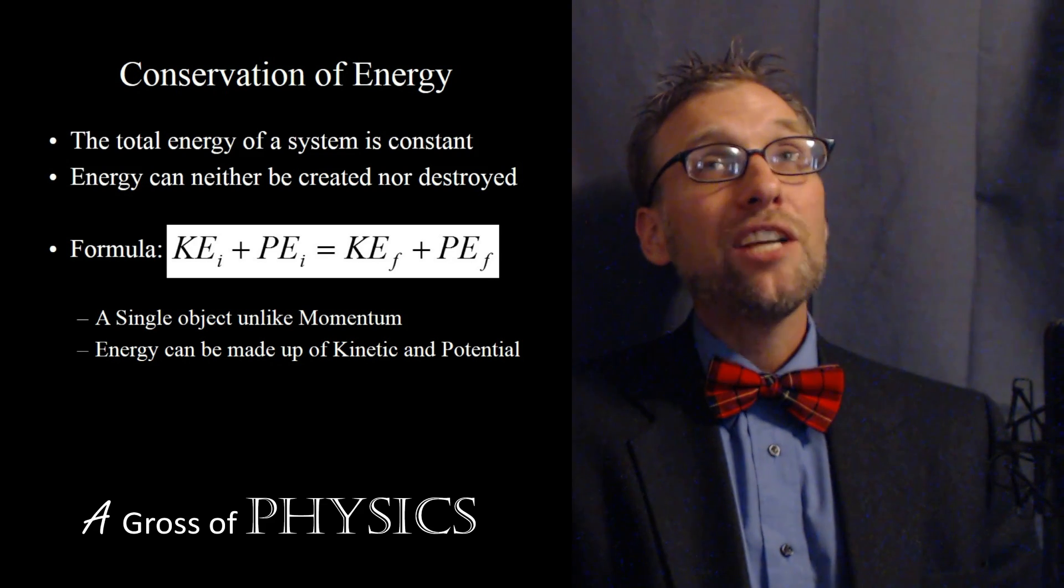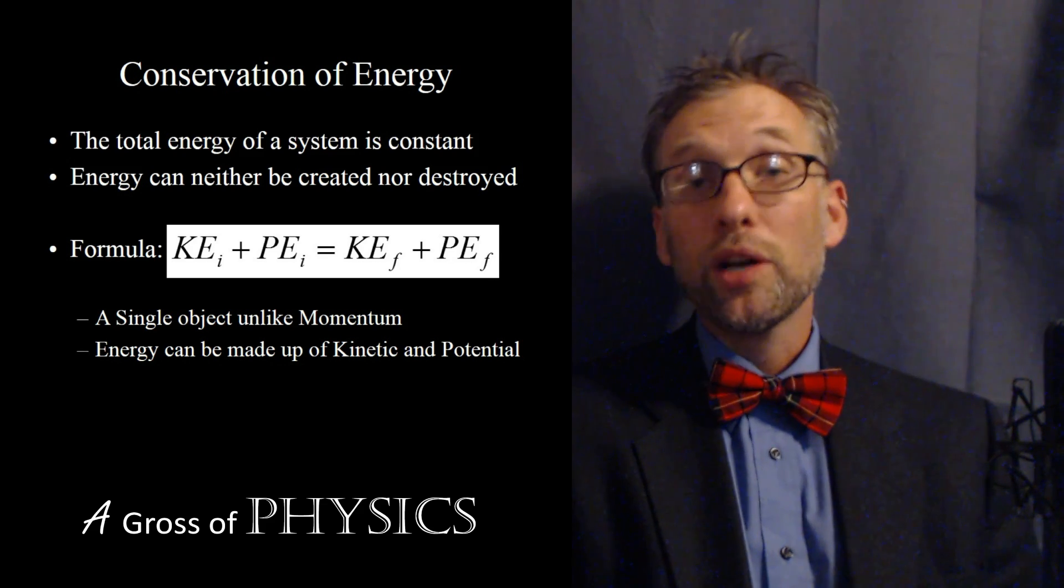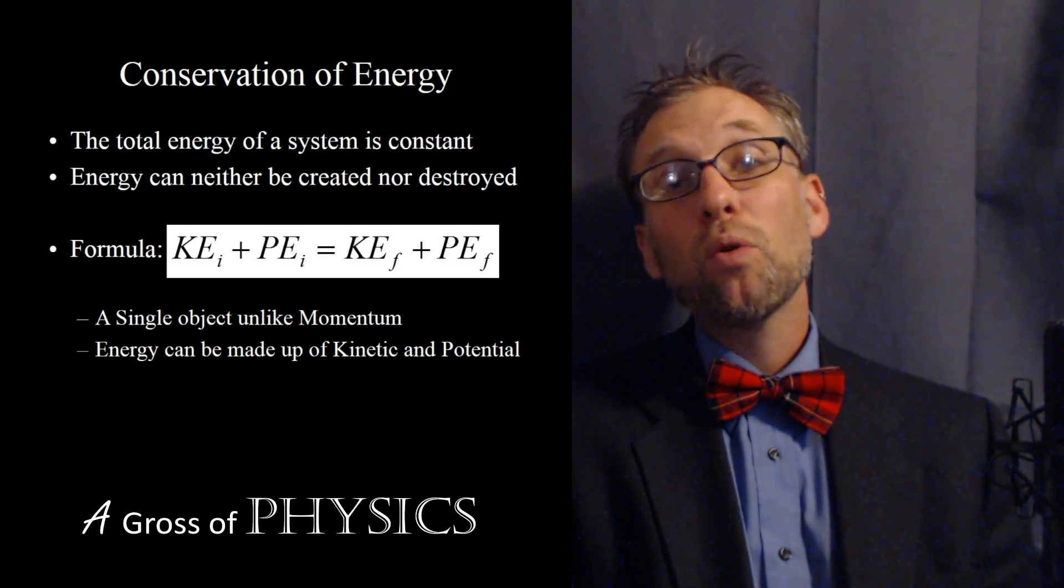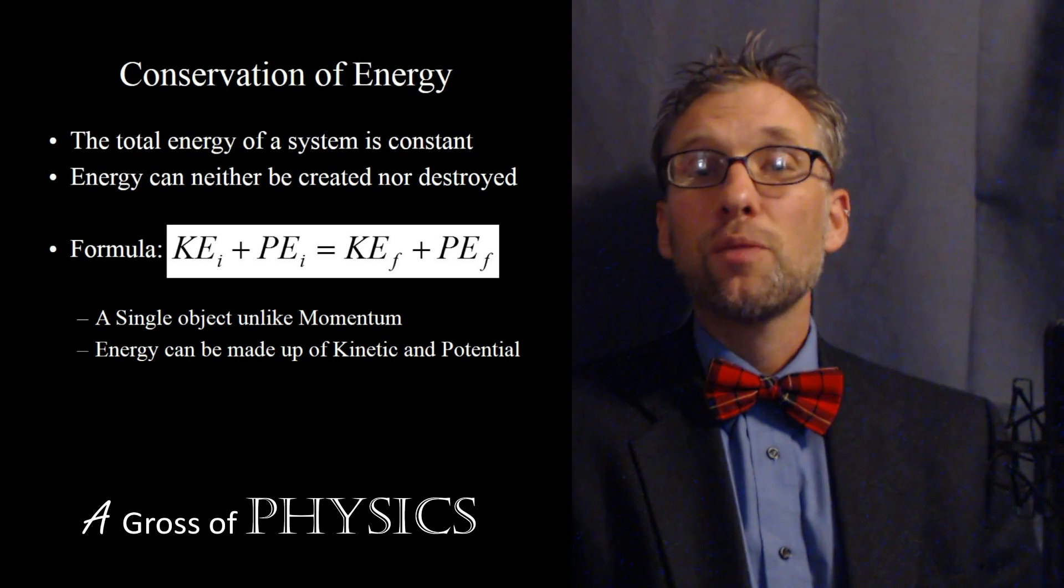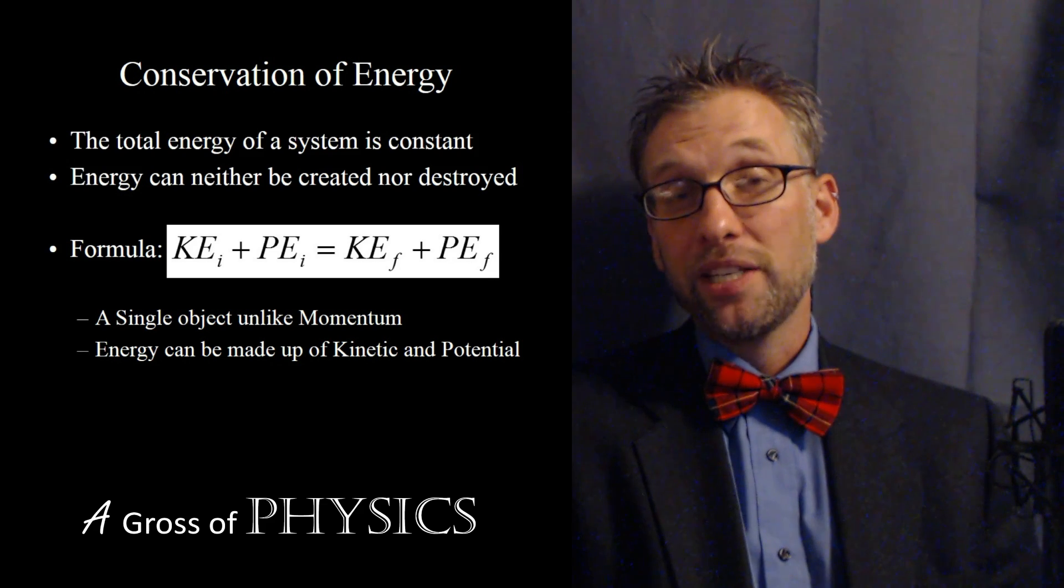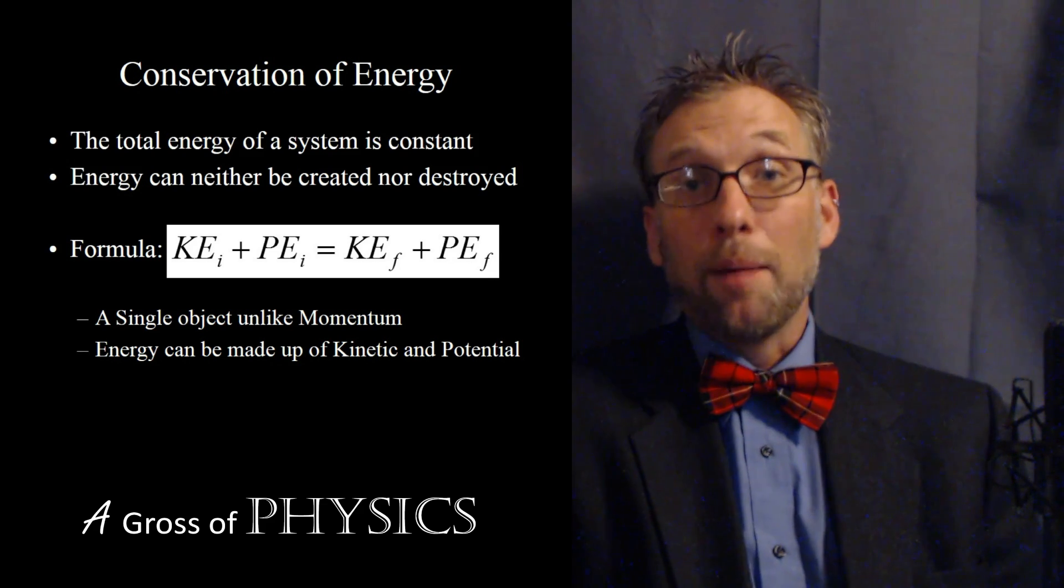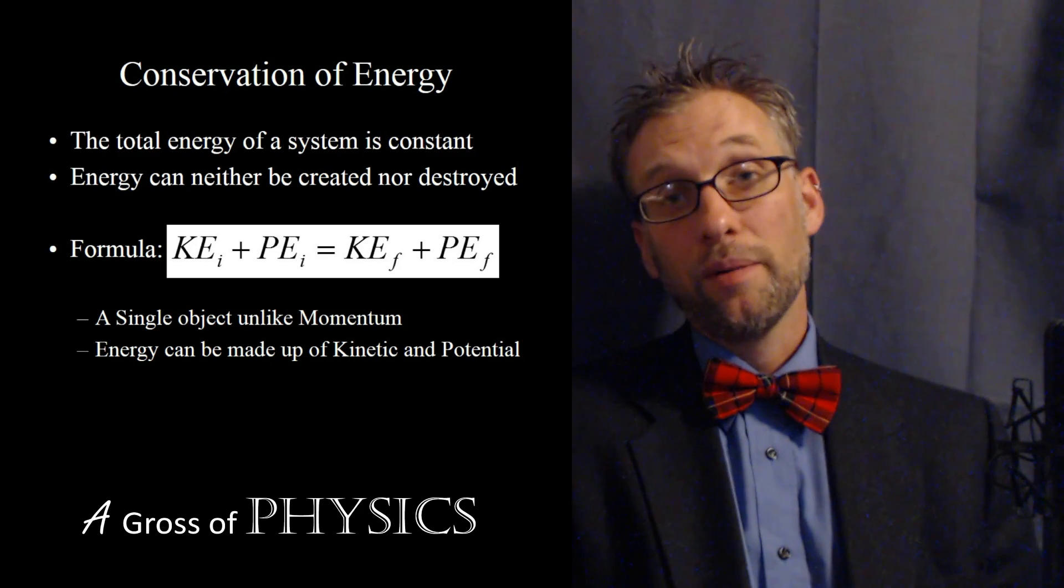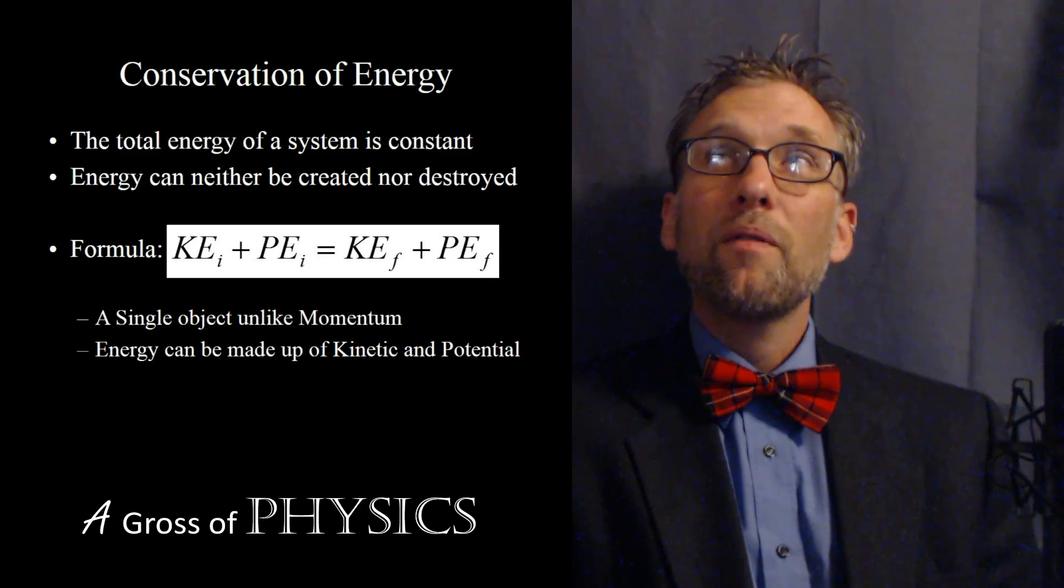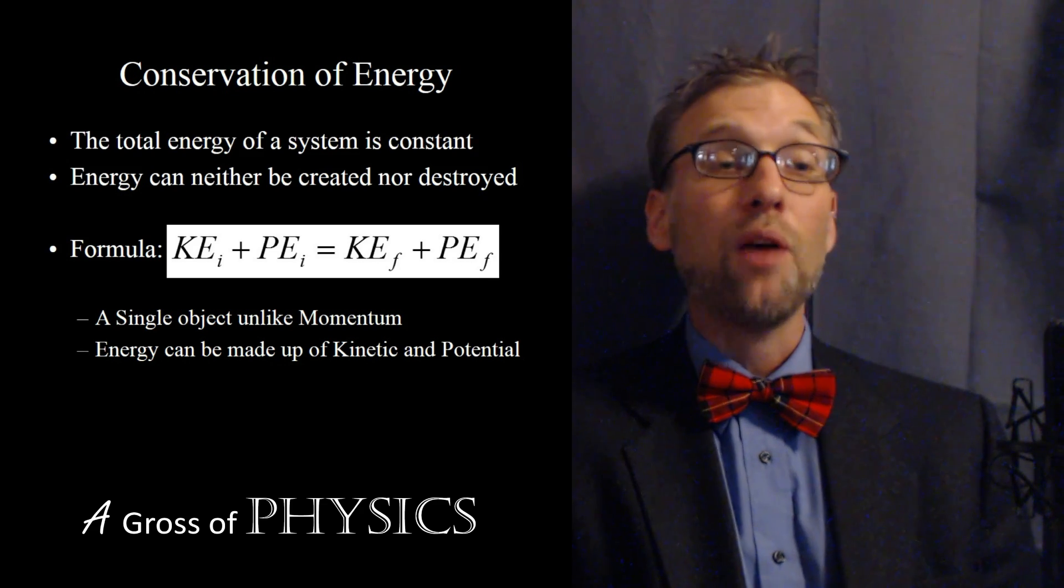The combination is typically going to be two terms on each side, although it could be three. But more likely, some of the terms will actually be zero. The object may start or end on the ground, giving the potential energy zero. Or the object may start or end stopped, giving the kinetic energy zero. So certain factors or certain variables within that equation will often simplify out of the equation.